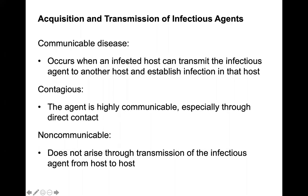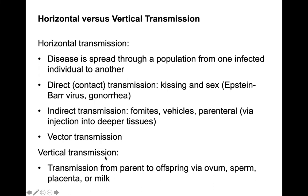Communicable disease occurs when an infected host can transmit the infectious agent to another host. Contagious means the agent is highly communicable, especially through direct contact. Non-communicable diseases do not arise through transmission of infectious agents. We also have horizontal and vertical transmission: horizontal means the disease spreads through a population from one infected individual to another, while vertical transmission is from a parent to an offspring.